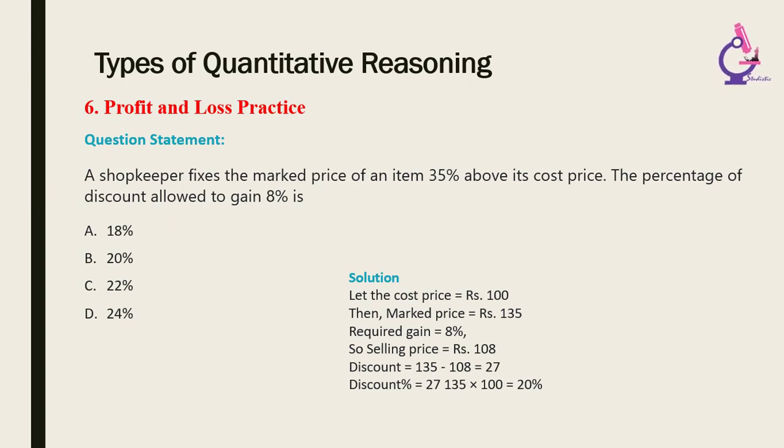The profit and loss formula is used in mathematics to determine the price of a commodity in the market and understand how profitable a business is. Every product has a cost price and a selling price. Based on the values of these prices, we can calculate the profit gained or the loss incurred for a particular product. The important terms covered here are cost price, fixed, variable, and semi-variable cost, selling price, marked price, list price, margin, etc.